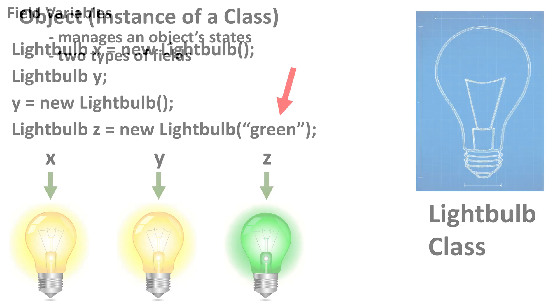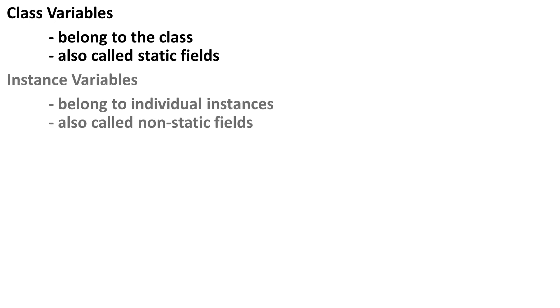Next, let's talk more about fields. We learned earlier that in Java, an object's states are managed by field variables. There are two types of fields you need to know about. The first are called class variables because they belong to the class. They are also known as static fields. The second are called instance variables because they belong to the individual instances. These are also called non-static fields.